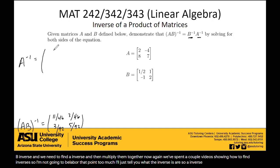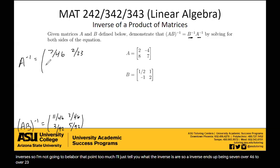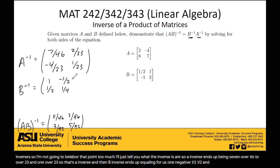I'll just tell you what the inverses are. So A inverse ends up being 7 over 46, 2 over 23, negative 4 over 23, and 1 over 23. So that's A inverse. And then B inverse ends up equaling for us 1, negative 1/2, 1/2, and 1/4.